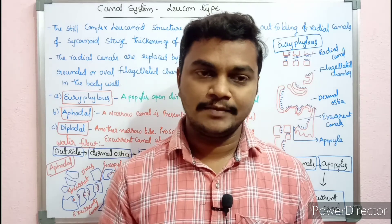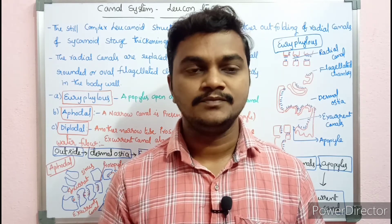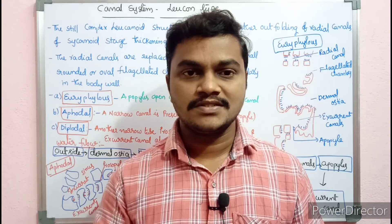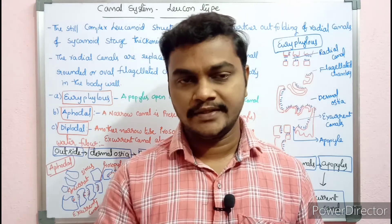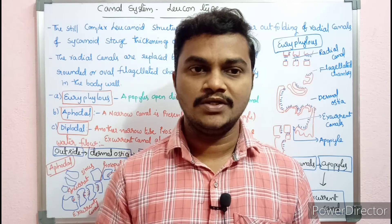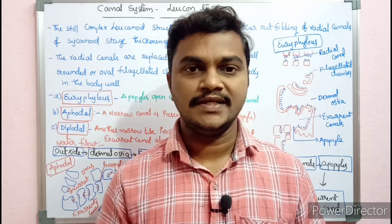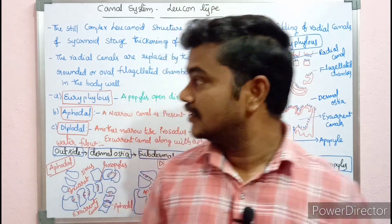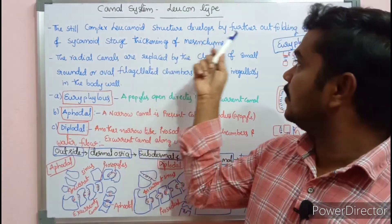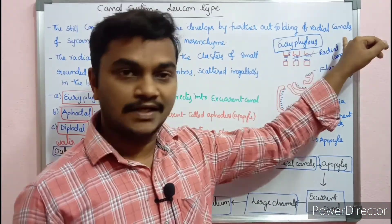For Sycon type and Ascon type canal systems, I will show you a link in the video. The Leuconoid type is the most complex compared to the Sycon type. The Leuconoid or Leuconite type of canal system is the most complex structure, developing by further folding.